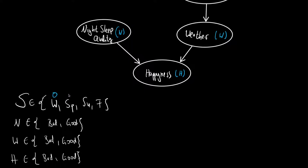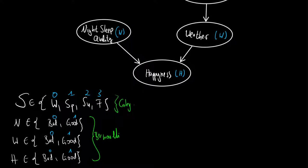Let's encode them as numbers: winter is zero, spring is one, summer is two, and fall is three. Bad and good will be zero and one respectively. So what we have here are discrete random variables. For night sleep quality, weather, and happiness, we only have two states, so we have a Bernoulli distribution. For the season, we have four states, so we have a categorical distribution. This means we need one parameter for the Bernoullis and three for the categorical, but we will save all four parameters.